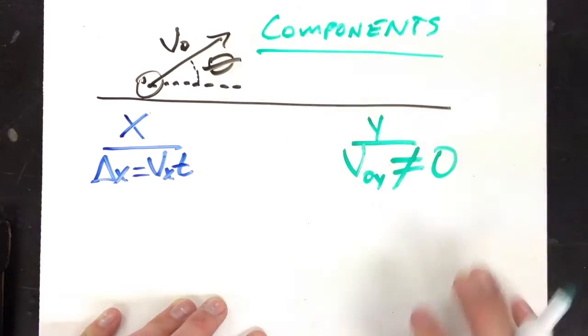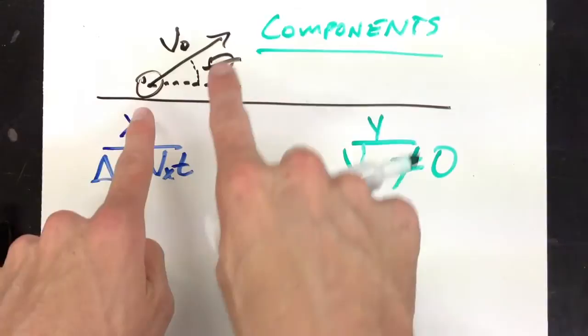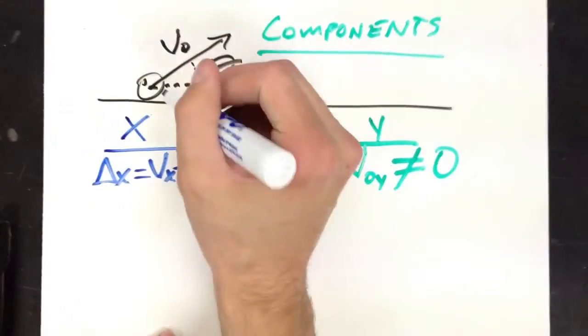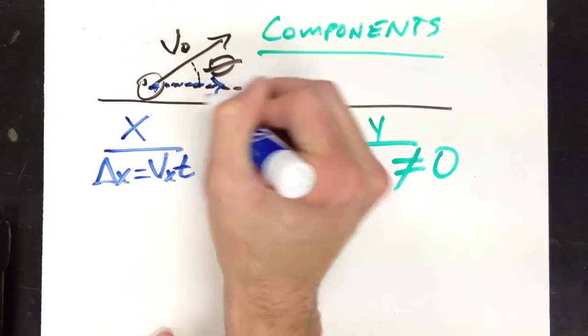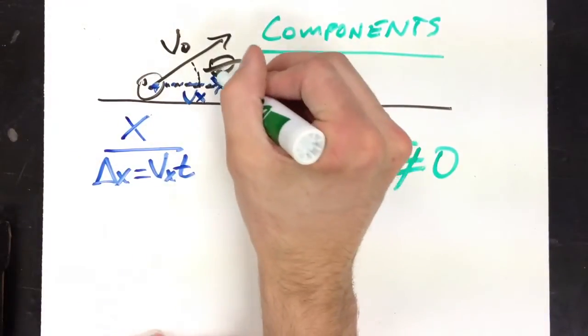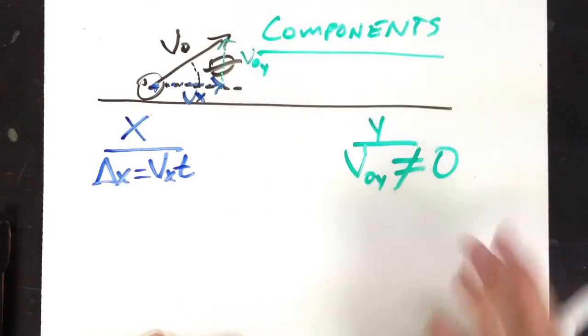Now, what are the components of a vector? Well, it's the x part and the y part. So right here, where it starts, the vector, that is my vx. And then right here is my v0y.